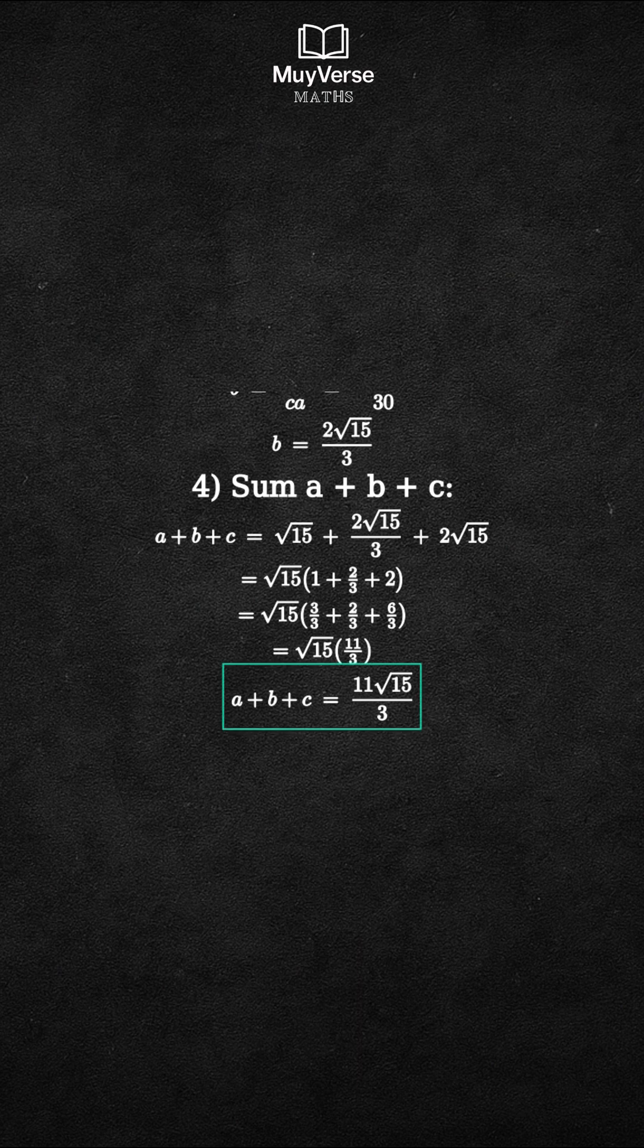Final answer. A plus b plus c equals 11 times the square root of 15, all over 3.